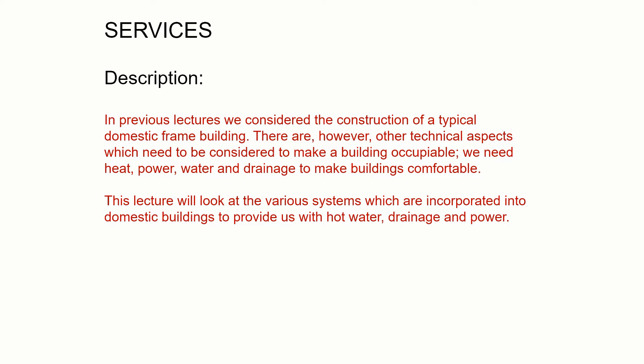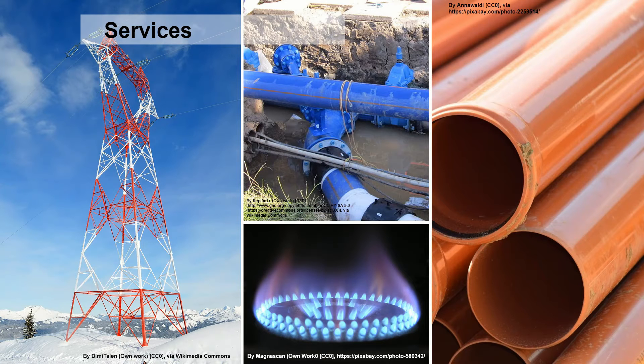We're going to look at heating, hot water, drainage and power systems, in particular looking at what happens within grid-connected properties and off-grid properties. The services we're looking at can really be thought of as basic human needs. We need power and electricity to give us light, refrigeration, television, mobile phone charging, and all the other things we take for granted.